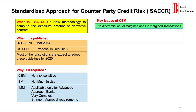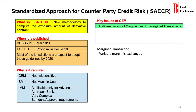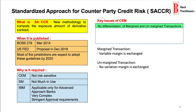Talking about the key issues of CEM, firstly, there's no differentiation of margined and unmargined transactions. A transaction where a variable margin is exchanged is called a margined transaction. When there is no variation margin exchanged, then it is termed as an unmargined transaction.